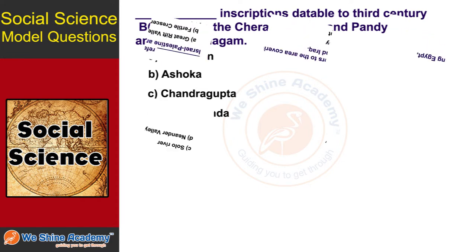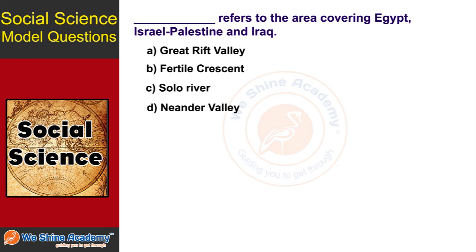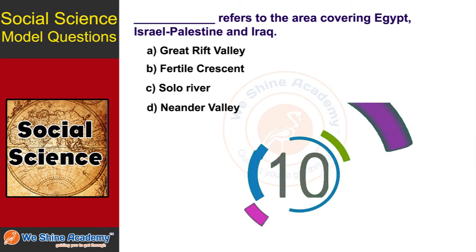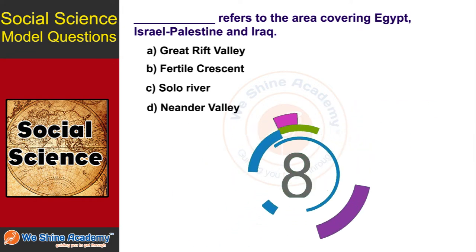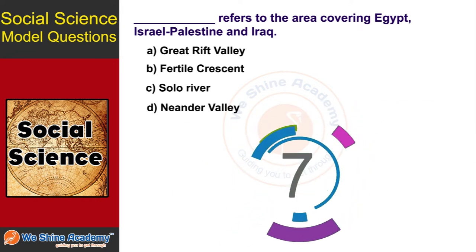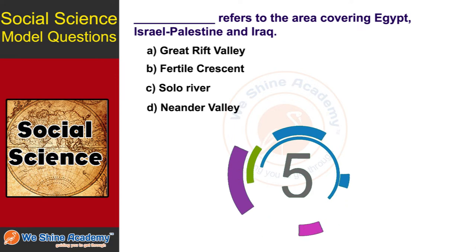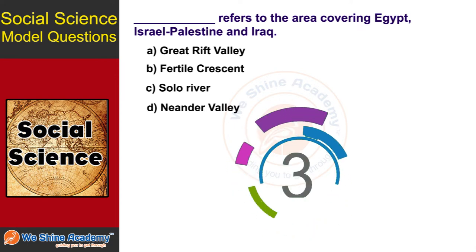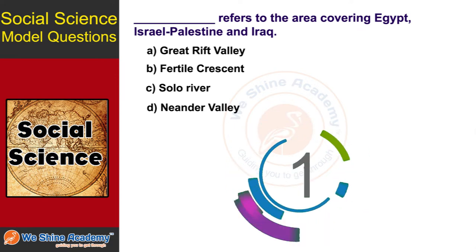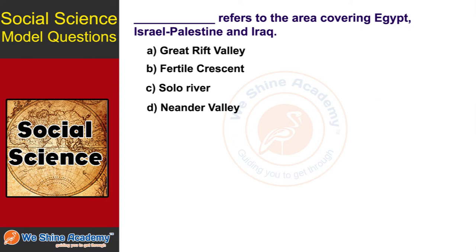The next question is: which term refers to the area covering Egypt, Palestine, and the surrounding region? You have 10 seconds to find out. The answer is Option B, Fertile Crescent — a hill region covering Israel and Palestine in that era.